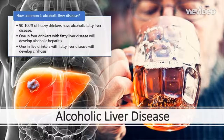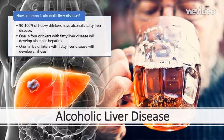Alcoholic liver disease is widespread in Ireland. It is estimated that 90–100% of heavy drinkers have alcoholic fatty liver disease. 1 in 4 drinkers with fatty liver disease will develop alcoholic hepatitis, and 1 in 5 will develop cirrhosis. A heavy drinker is someone who regularly exceeds 21 standard drinks per week for men and 14 for women.